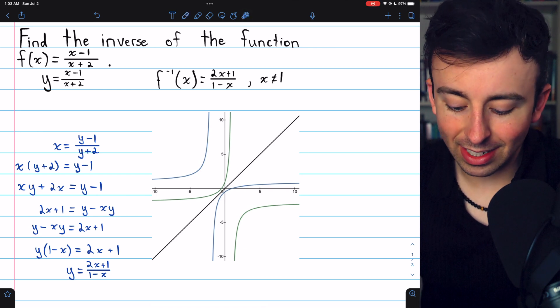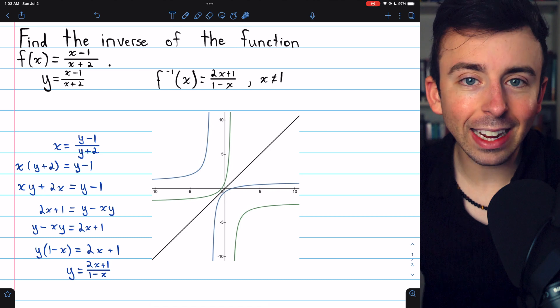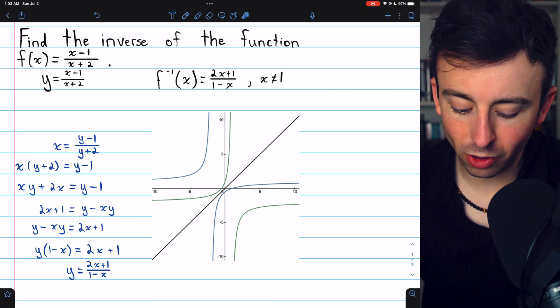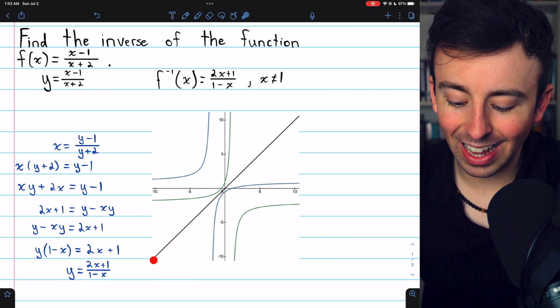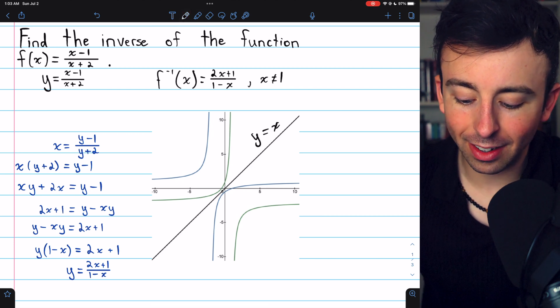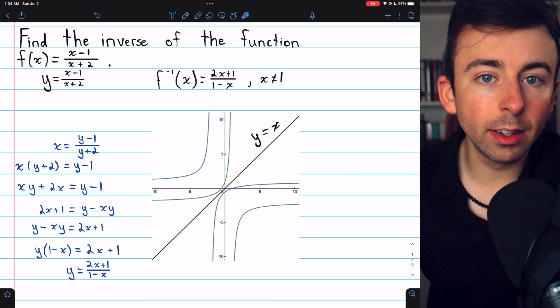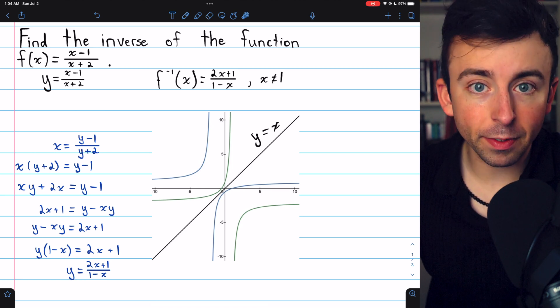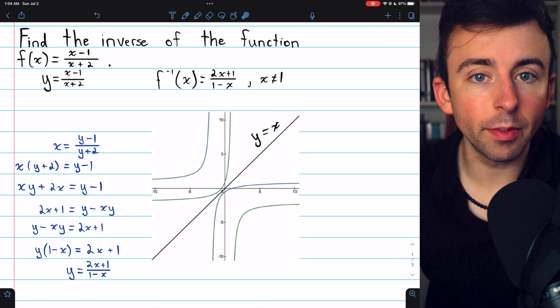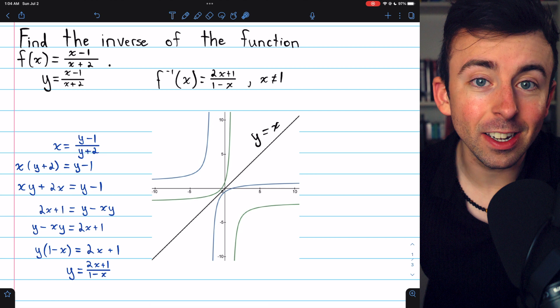And what you should notice is that the green function, the inverse, is a reflection of the original function across this line, which is the line y equals x. And graphically, that's how inverse functions work. The inverse of f of x, graphically, will be the reflection of f of x across the line y equals x, as we see here.